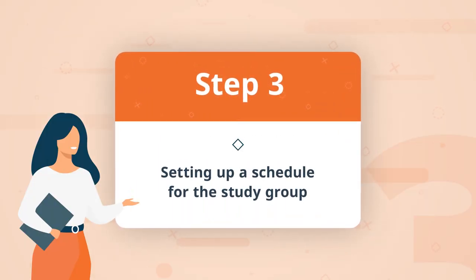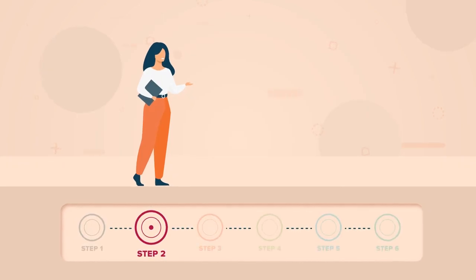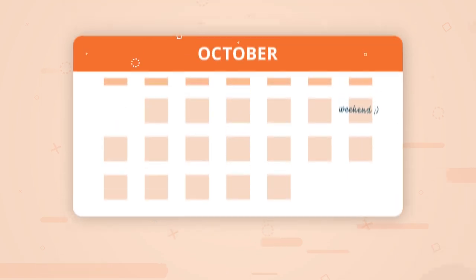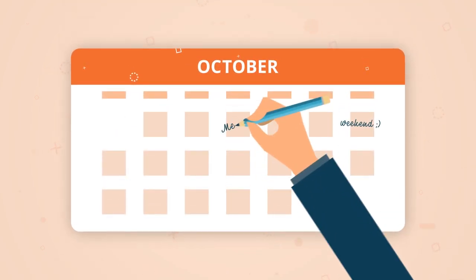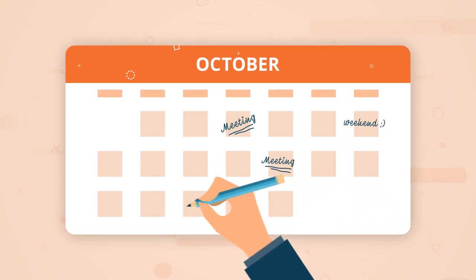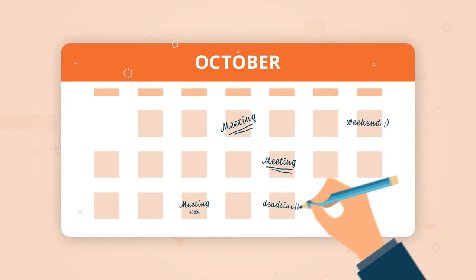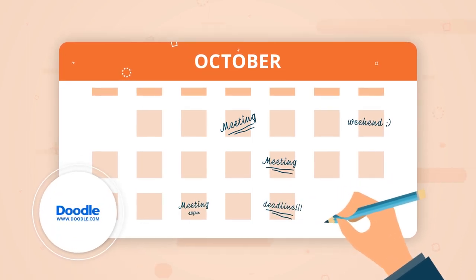Step 3: Setting up a schedule for the study group. Participating in a study group should be as easy as possible for your colleagues, so finding the right schedule for your meeting is really important. Considering the timing of the MOOC — for example, when modules are open — and any deadlines is also very important. Using Doodle to find convenient times for those participating can also help. I organized the first face-to-face meeting during the first week of the course, then one meeting per week during the duration of the course.